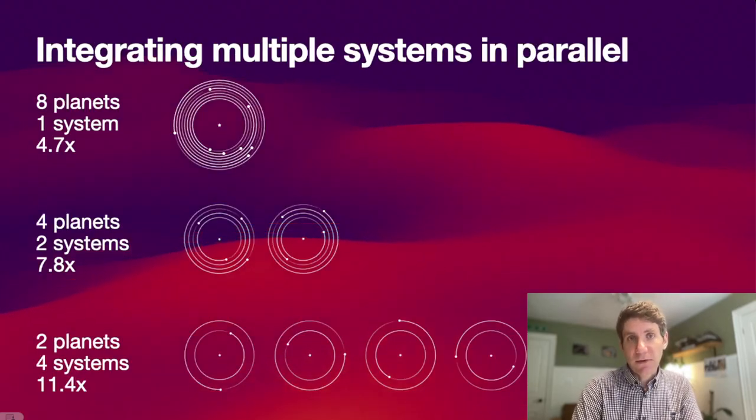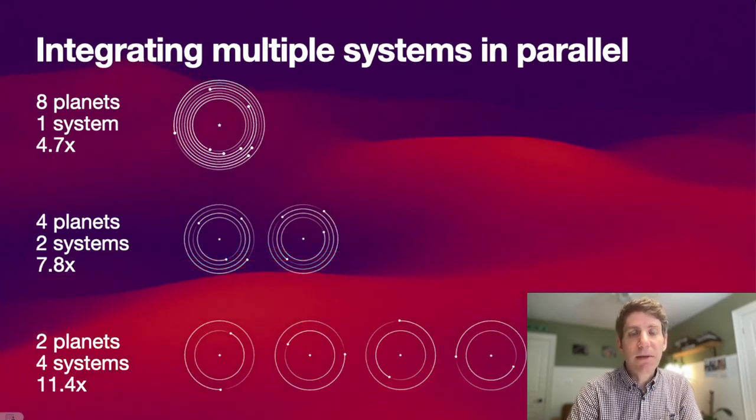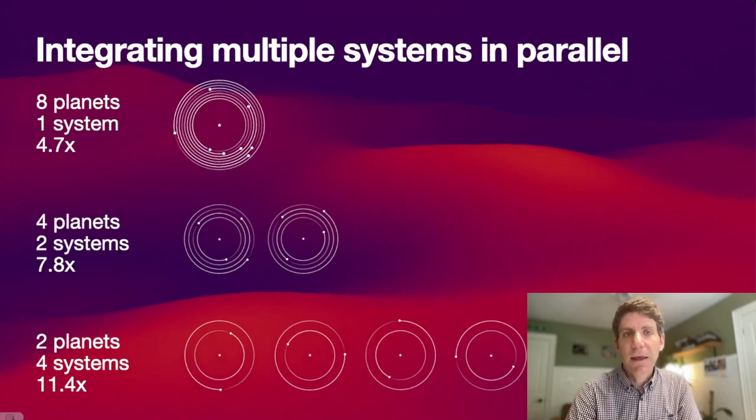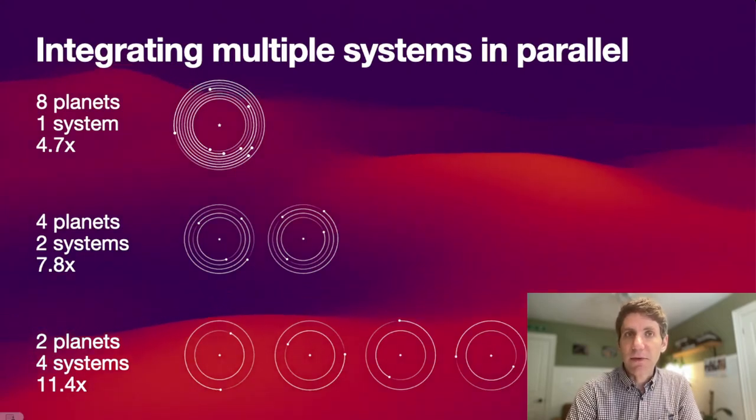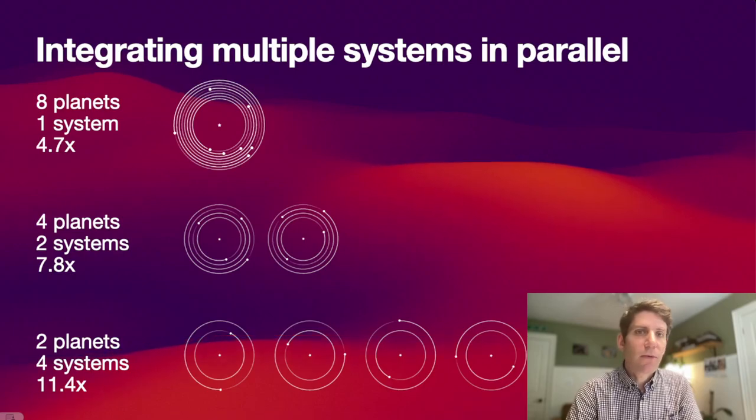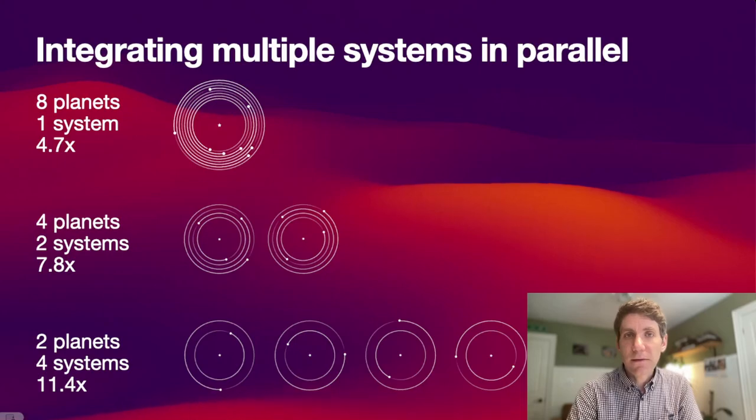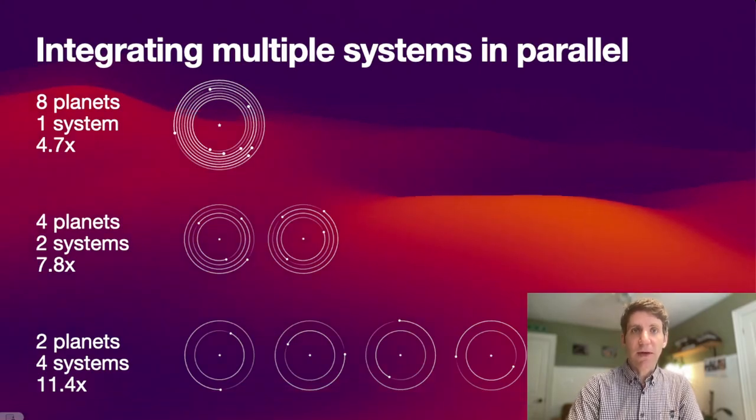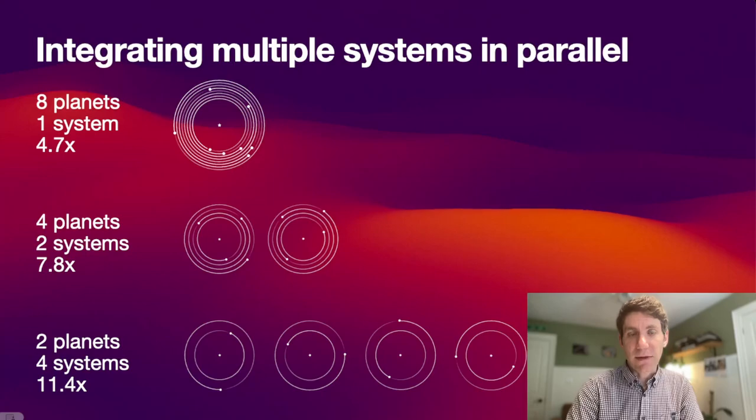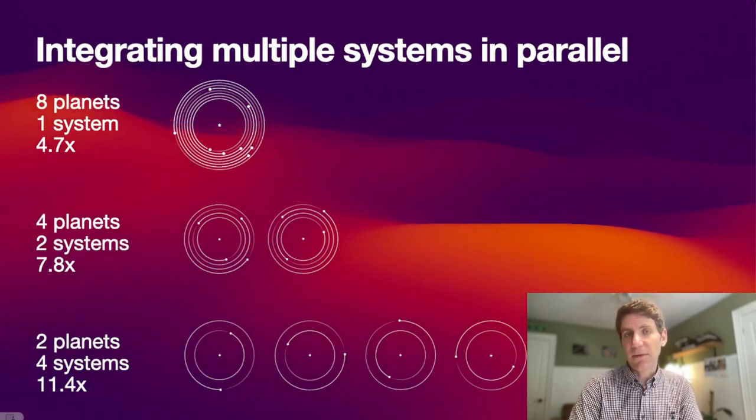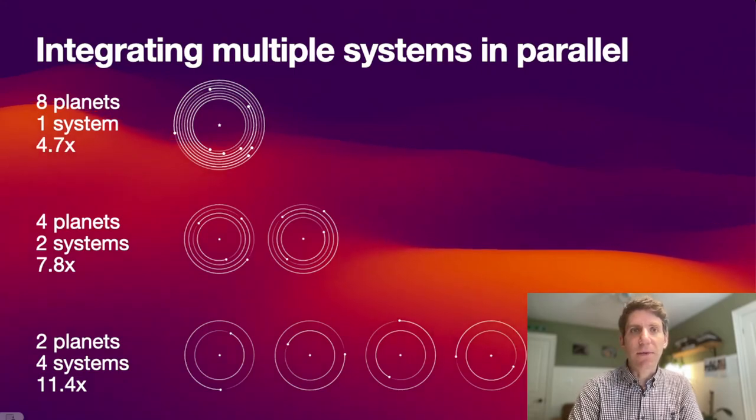With all these restrictions, if you can use WHFAST-512 for your problem, you might be in for a quite significant speedup. If you have one planetary system with 8 planets, you get an almost 5x speedup compared to WHFAST. This is significant. Remember that WHFAST has already the word FAST in it. It was already very fast to begin with. Now you get an additional 5x speedup.